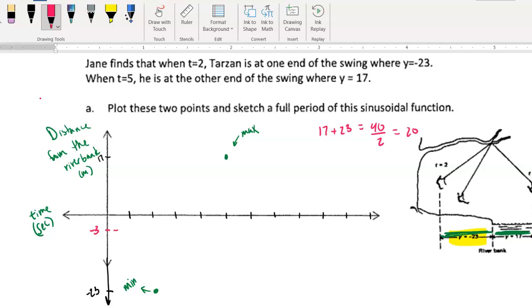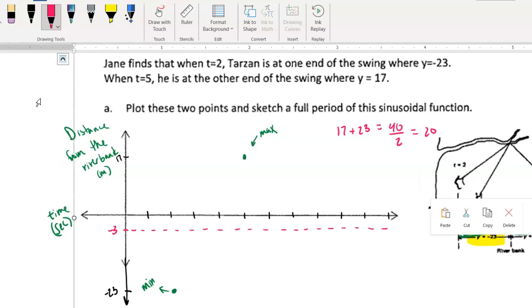So if you go 20 meters down from 17 or 20 meters up from negative 23, either way, we're going to end up with our horizontal or midline being there at negative 3. Okay. So now we know that our amplitude, let's see, where should we put this? Put this down here. Is that distance of 20.